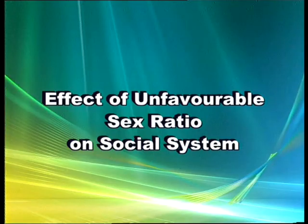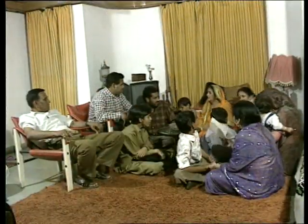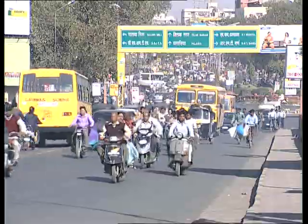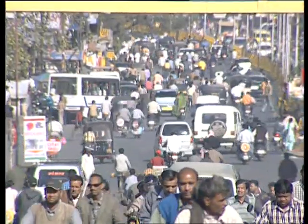Each and every society has its own system of functioning. Although variations can be observed among various societies and communities, we can see some commonness among them — for example, in all human societies, people marry and give birth to children. If a society has fewer females compared to males, then some males will be bound to remain unmarried. Enjoying sex is a biological need of human beings, but they can enjoy this natural right only after following the social rule, that is marriage. In case of an unfavourable sex ratio, the birth of social crisis may take place, which may lead to a disbalance in the social system.